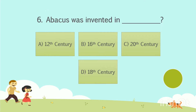Question No. 6. Abacus was invented in which century? Option A: 12th century. Option B: 16th century. Option C: 20th century. Option D: 18th century. Your time starts now. The answer is Option A: 12th century.